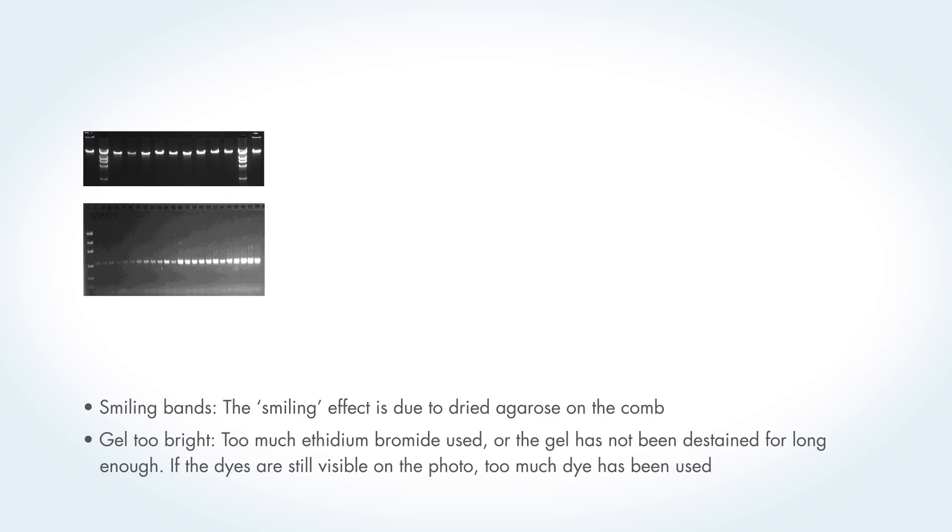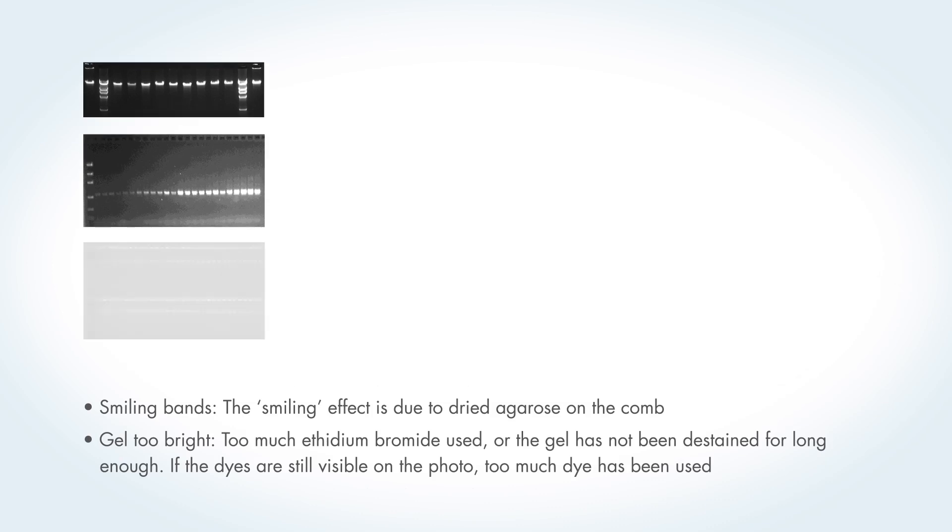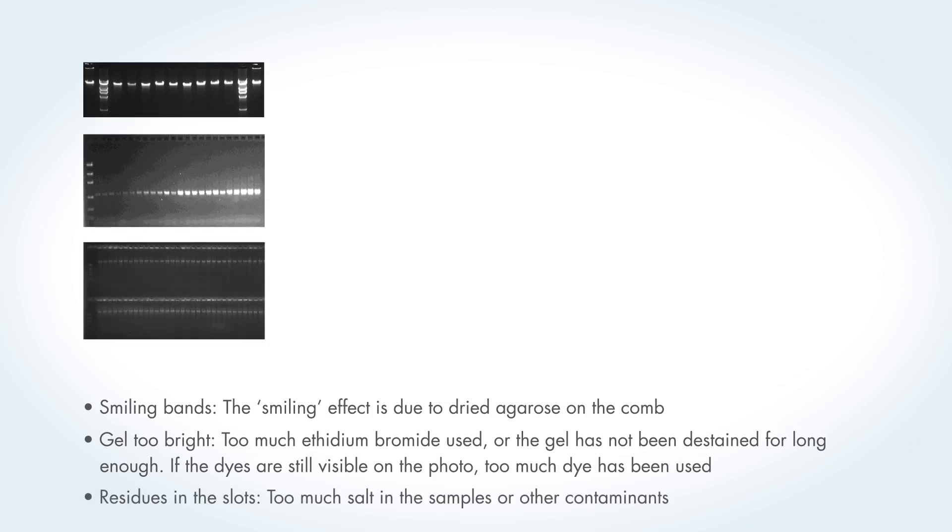One more effect can be seen in the second photo. The two dyes used are visible, and this indicates that too much dye has been used. This can be distracting when the DNA band has the same position as the dye. In the bottom photo we can see residues in the slots. These are caused by too much salt or other contaminants in the probes.